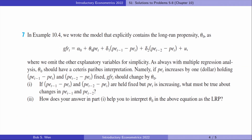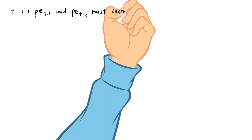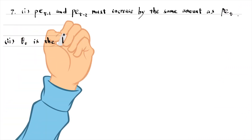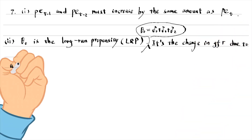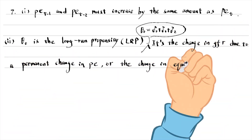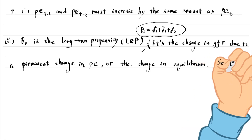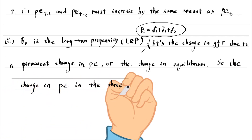Let's find answers to problem 7. For the first question, to have a ceteris paribus interpretation for the long-run propensity, the personal tax exemption in time t-1 and in time t-2 should increase by the same amount as the tax exemption in time t. Theta 0 is the long-run propensity. By definition, it is the change in the fertility rate due to a permanent change in the personal tax exemption, or it is the change in equilibrium. So we treat the changes in the tax exemption in the three time periods the same.